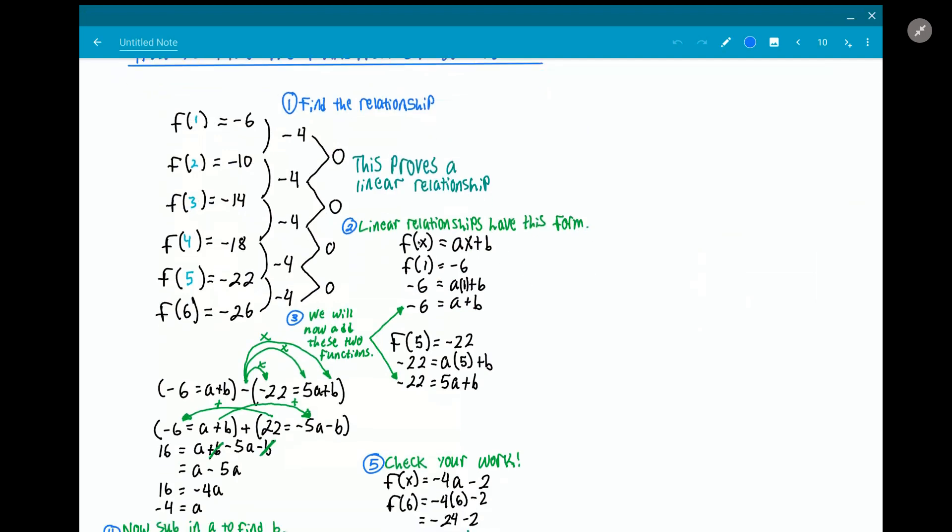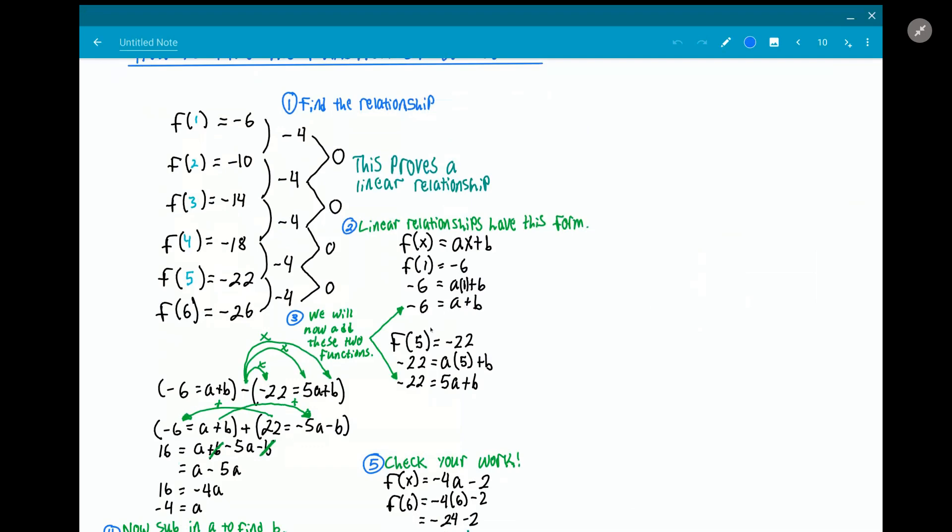And so if we go ahead and plug f(1) in, we put 1 in as x. Then we can say that that's equal to -6. So if you pull that -6 over here and you say that's equal to a plus b, a times 1 plus b, then you can say that -6 is equal to a + b.